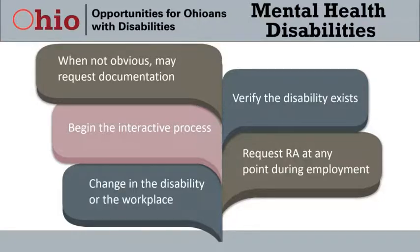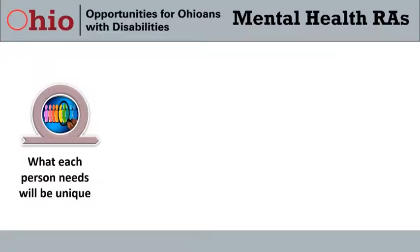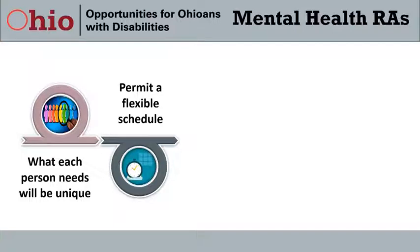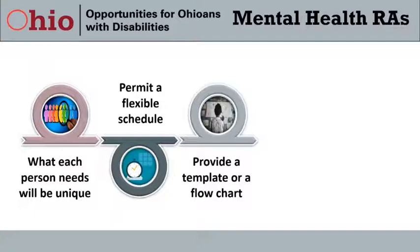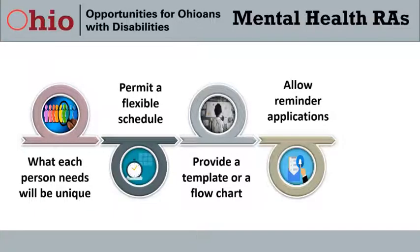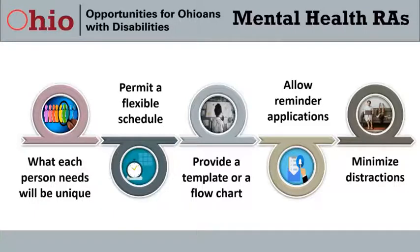Reasonable accommodations for employees with mental health disabilities returning to the workplace can include permitting a flexible schedule to allow attendance at regular medical appointments, providing a template for creating reports or a flowchart to assist with completing work tasks in the proper order, using reminder applications on a smart device for tasks like taking a break or returning from lunch on time, and installing partitions between workstations in high-traffic areas to minimize distractions and increase concentration for work.